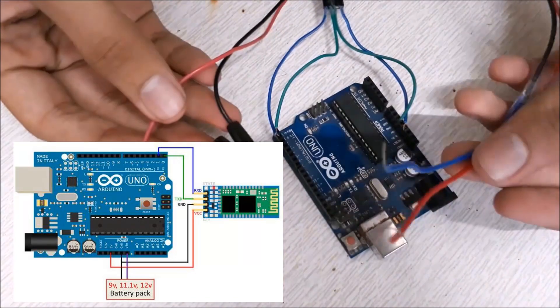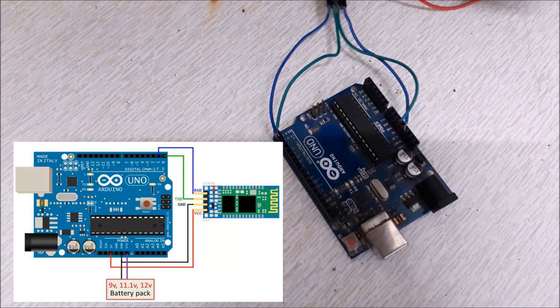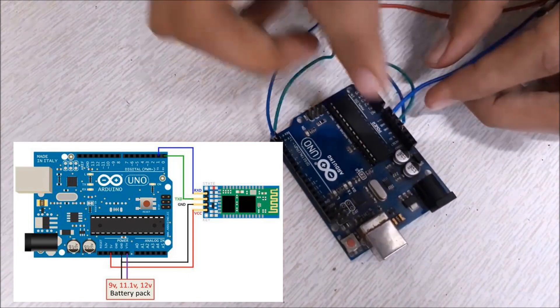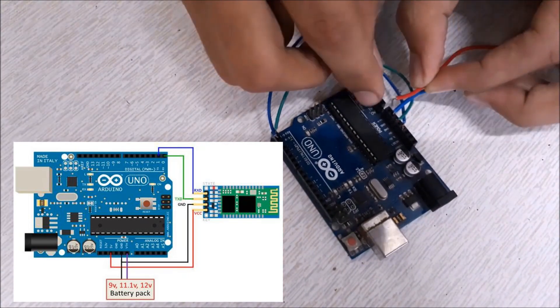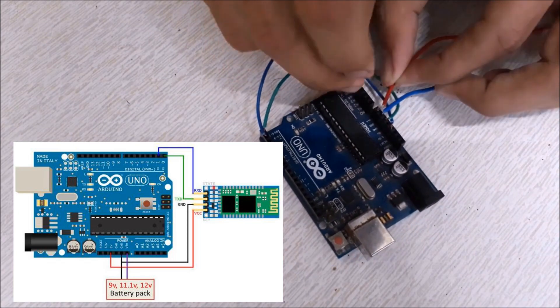Now take 2 more wires which we will need to connect our Arduino to power supply. As I am using 11.1V power supply, I will be connecting the positive wire to VIN on Arduino and negative wire to GND on Arduino.